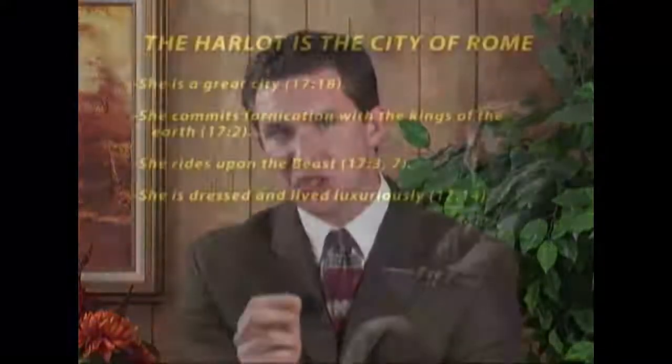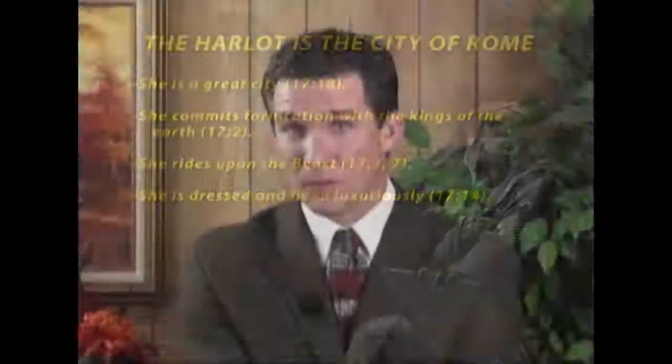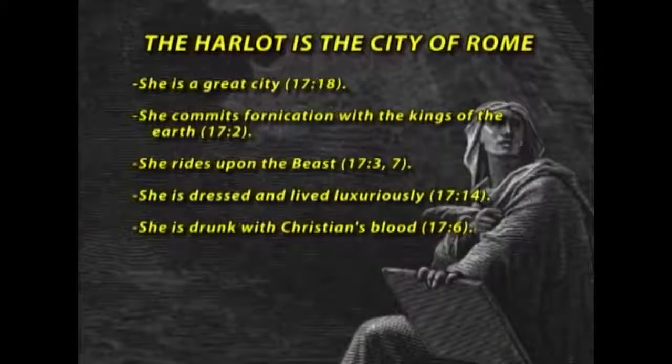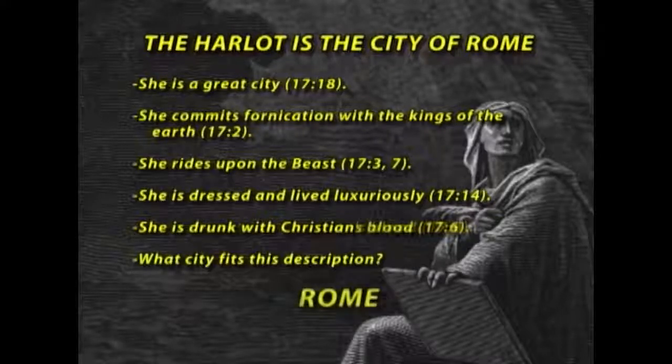Revelation 17, verse 4 says she is dressed luxuriously and lives a luxurious life. As you study history, Rome — the Senate, the government, the elite — lived one of the most luxurious lives imaginable. Revelation 17, verse 6 says she is drunk with Christians' blood. During the first century, Rome was the persecutor of Christians, putting them to death — some thrown to the lions, anyone caught worshipping as a child of God was killed. Who is this harlot? She is a city, and that city fits the description of none other than Rome itself.